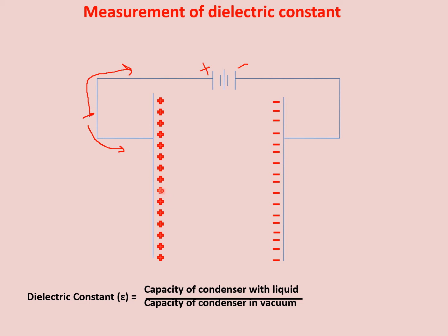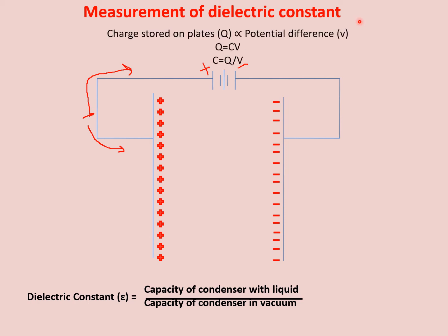One more thing — यह जो charge develop हुआ है, positive at this side and negative at this plate, इसकी वज़ह से इन दोनों के बीच में potential difference generate होगा, जिसको हम voltage भी कहते हैं. जो charge store हुआ है plate पे, it is directly proportional to the potential difference. Proportionality sign को हटाने पर हम constant C use करते हैं — this C is known as capacitance. So, C = Q/V.